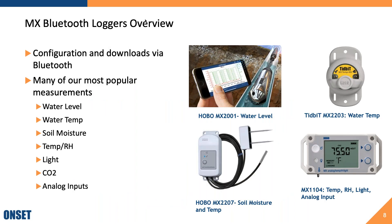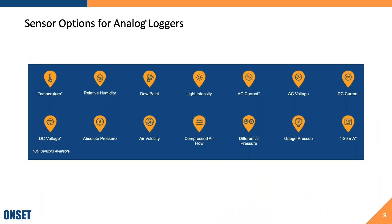MX Bluetooth loggers all offer configuration and download via Bluetooth and support many of our most popular measurements, including water level, water temperature, soil moisture, temperature and relative humidity, light, dew point, and CO2. You also have the option on some MX loggers to add an analog input, which can expand your sensor options to include things like external temperature, AC current, and various pressure measurements.